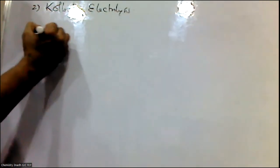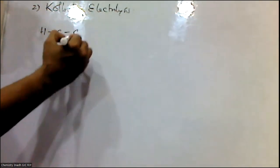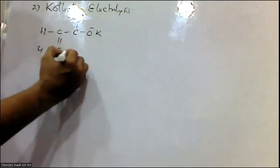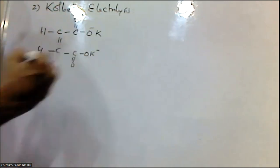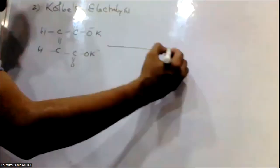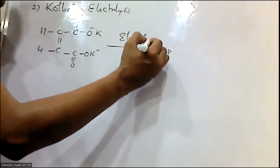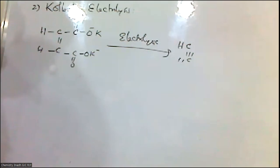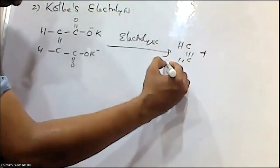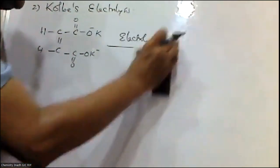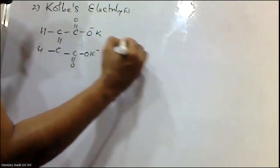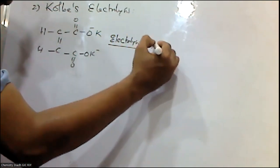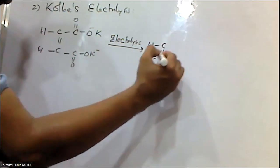For example: HC≡C-COO⁻ K⁺ (potassium salt). This on electrolysis, acetylene gas is produced at the anode.